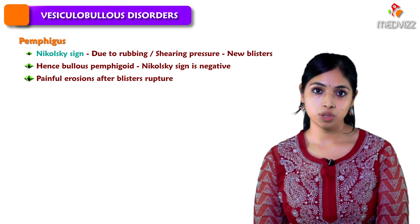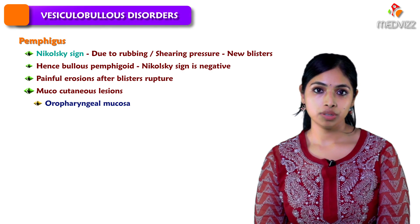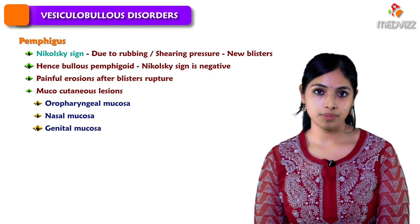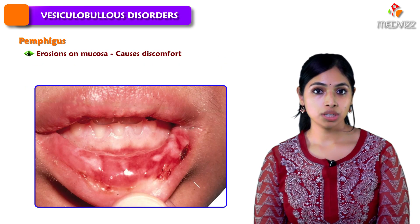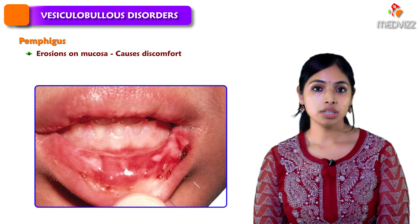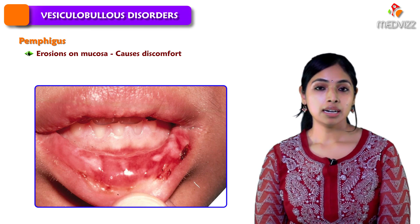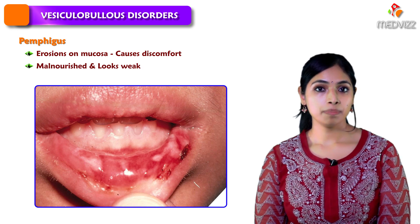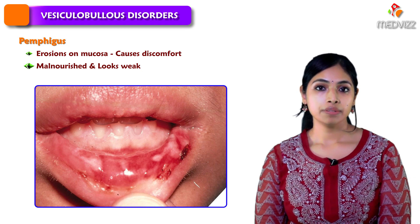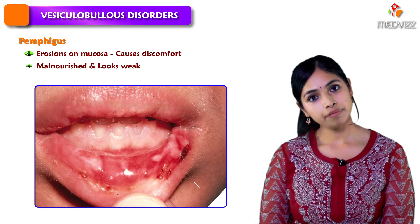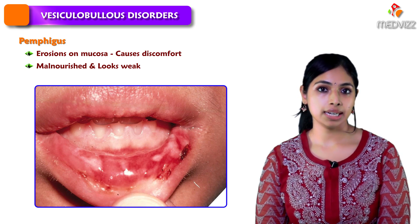Mucocutaneous lesions are seen, with involvement of oropharyngeal mucosa, nasal mucosa, and genital mucosa. Instead of intact blisters on the mucosa, there may be erosions, and the patient is often unable to eat or sleep peacefully due to the discomfort. The patient in Pemphigus is also malnourished with a generally weak demeanor, which differentiates it from bullous Pemphigoid, in which the patient is in a much more stable condition.